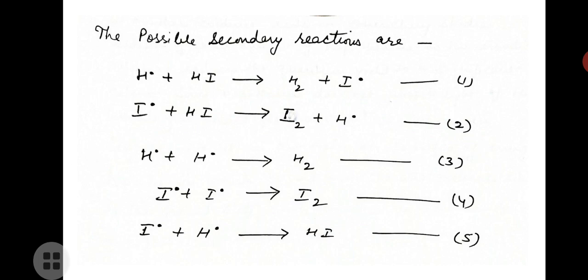Reaction 2 is endothermic and thus cannot take place at ordinary temperatures. Reactions 3 and 5 are highly exothermic; the heat produced is so high that the products formed undergo dissociation, making the occurrence of reactions 3 and 5 highly unlikely. Eliminating reactions 2, 3, and 5, reactions 1 and 4 are the only two likely secondary reactions.